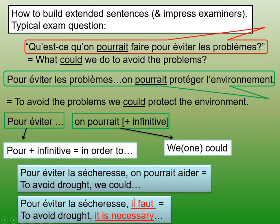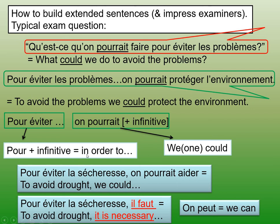To avoid drought, 'il faut' means it's necessary or you must — we've done this before when we did telling people you must eat or drink two or three litres a day. You could also use 'on peut' — we can. So in order to avoid drought, we can do whatever it is. All three of these constructions can be used in different contexts. We definitely need to recognise these two in our reading and listening. Make a note of those, and then we'll look at the solutions.